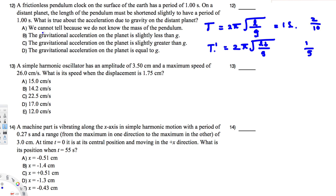From this we know the distant planet's gravity is less than Earth's. Looking at the answers: we cannot tell because we don't know the mass of the pendulum — not true. The gravitational acceleration on the planet is slightly less than G — that's true. The gravitational acceleration on the planet is equal to G — not true. So the answer is B.